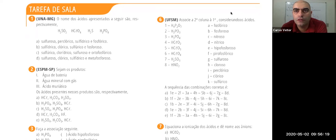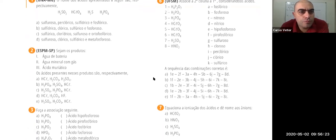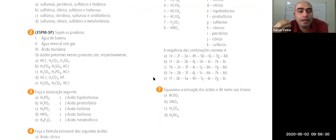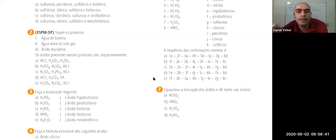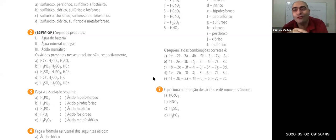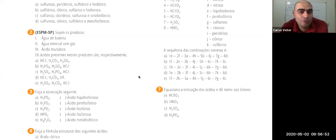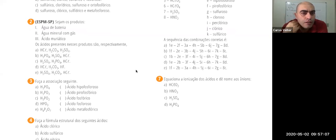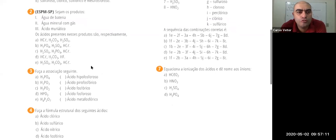Questão 2: água de bateria, água mineral com gás e ácido muriático. Água de bateria é água com ácido sulfúrico — as baterias antigas tinham chumbo e cádmio como eletrodos e ácido sulfúrico como ponte salina. Água mineral com gás tem gás carbônico, logo tem ácido carbônico. Ácido muriático é o ácido do estômago, o HCl — clorídrico. Então: sulfúrico, carbônico e clorídrico. Letra E.